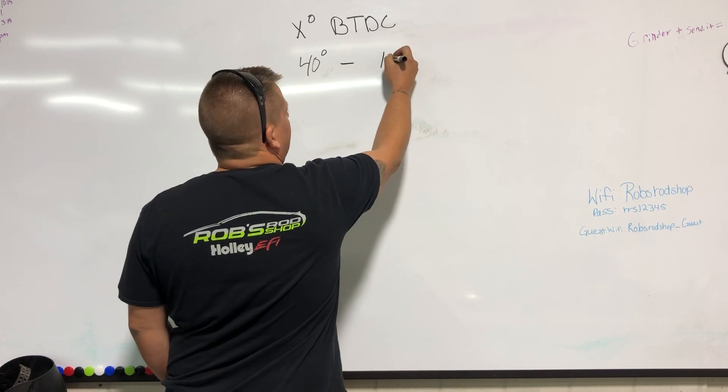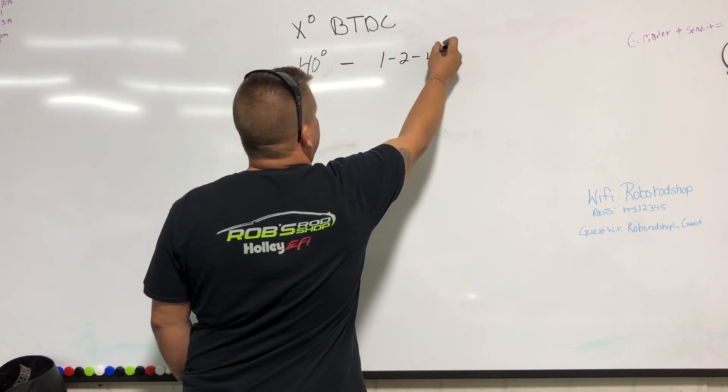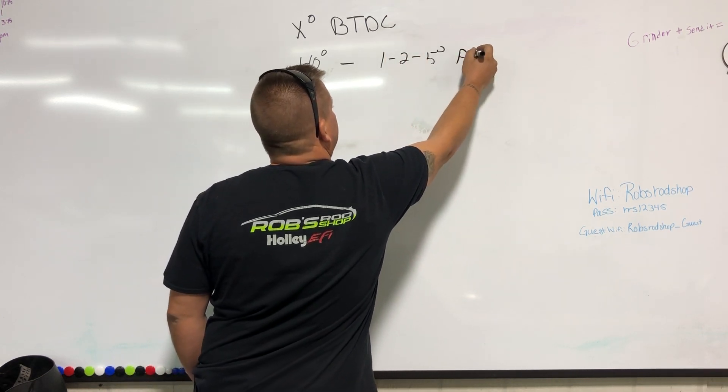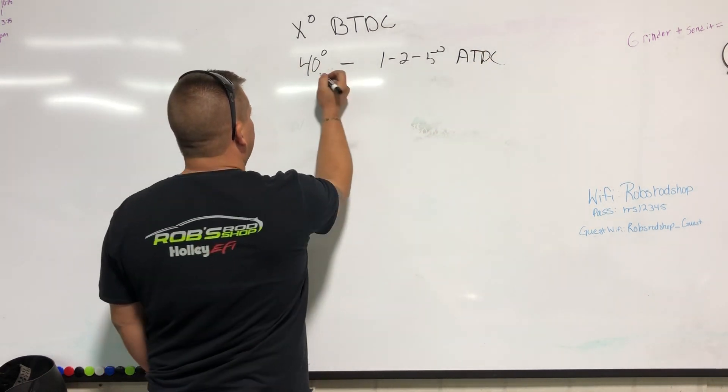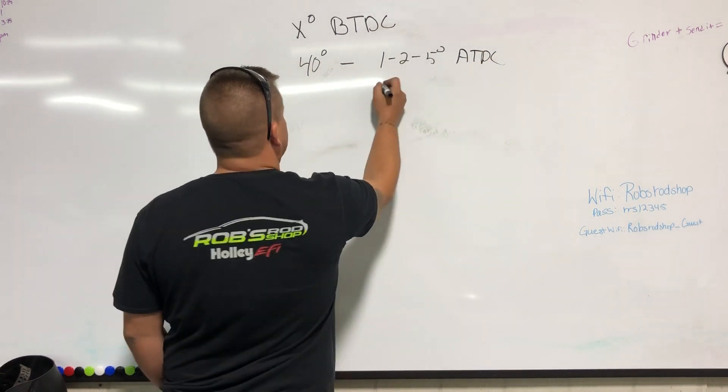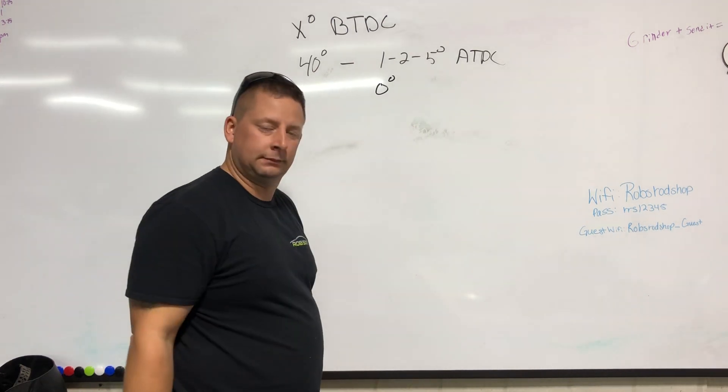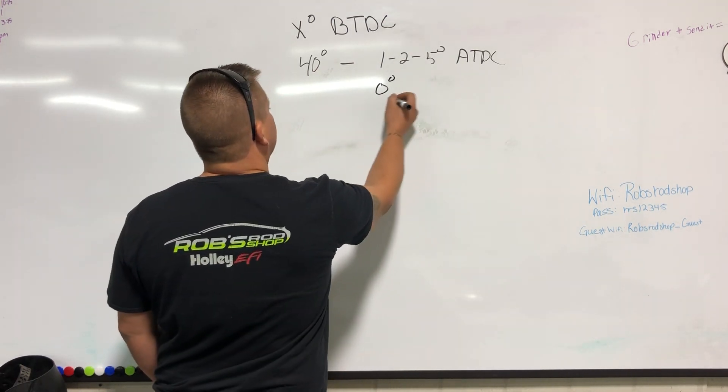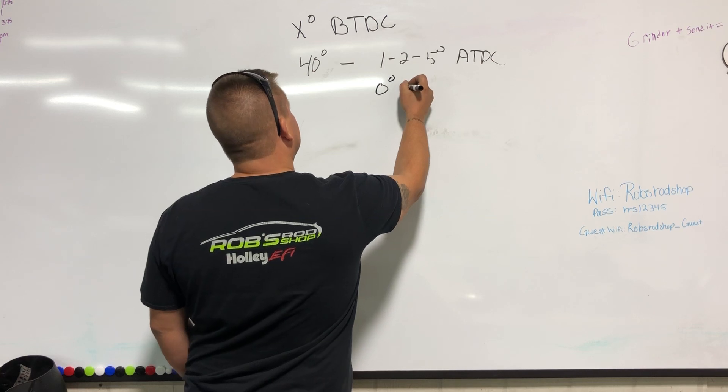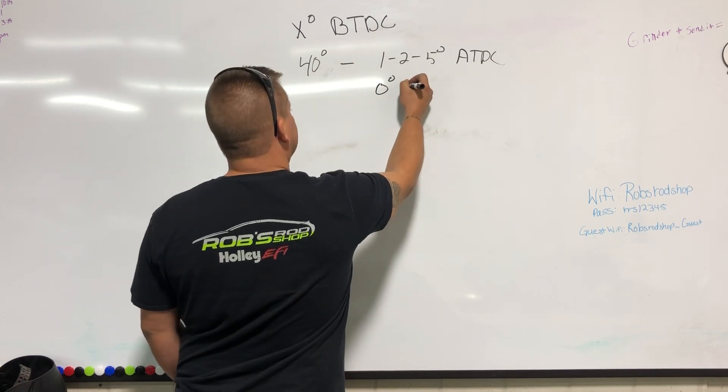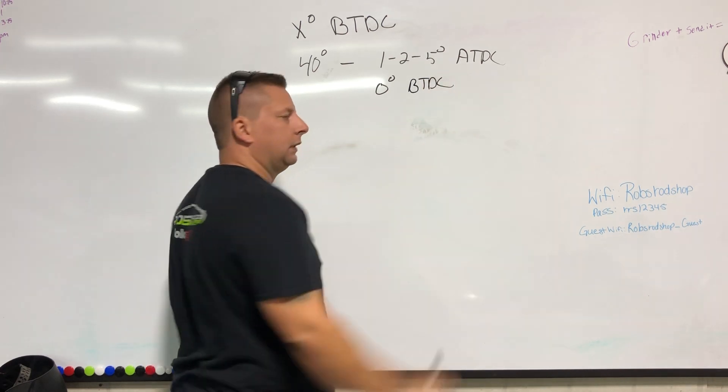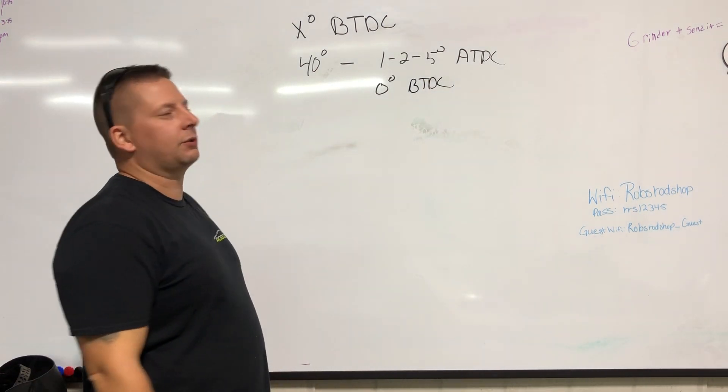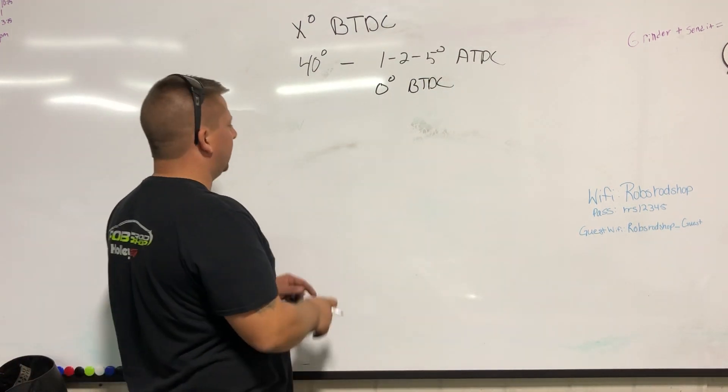Let's say we light it at 40 degrees before TDC, we hope that it's not actually burning and lit completely until at least one to five degrees after TDC. If we light it too soon and it happens at zero degrees TDC or before, you have detrimental catastrophic failure, and I'll tell you why.